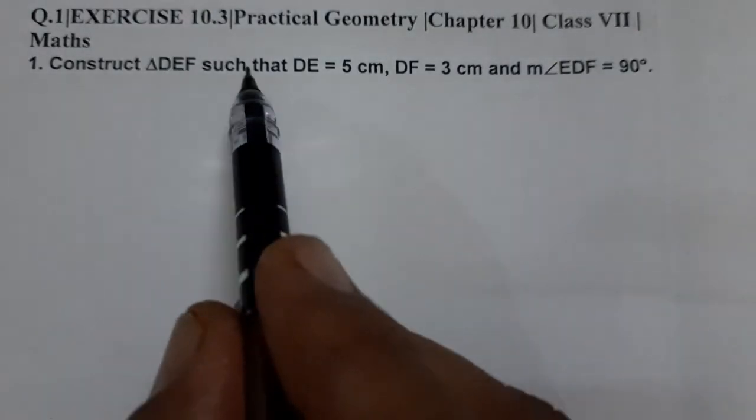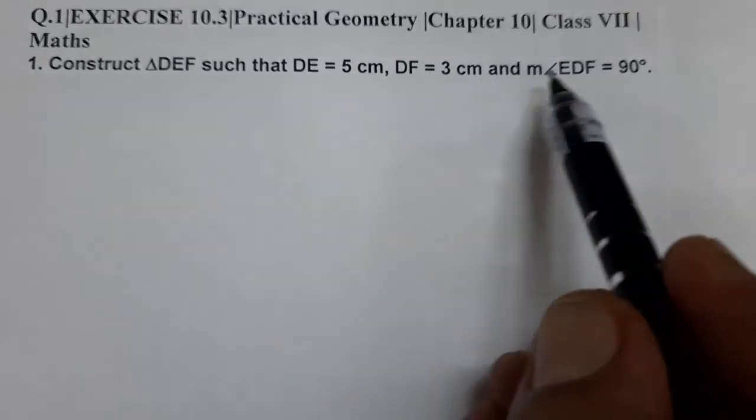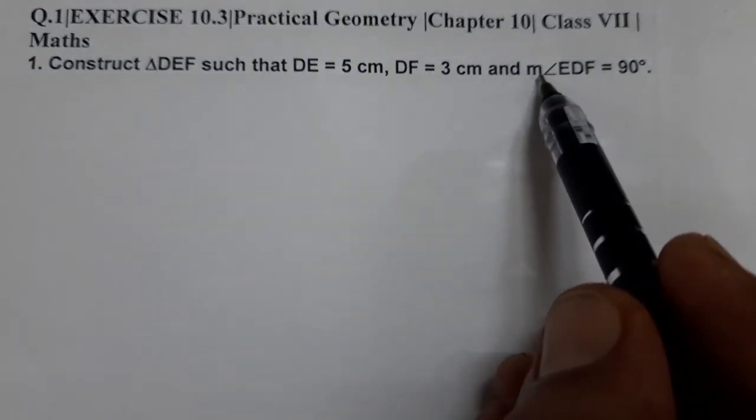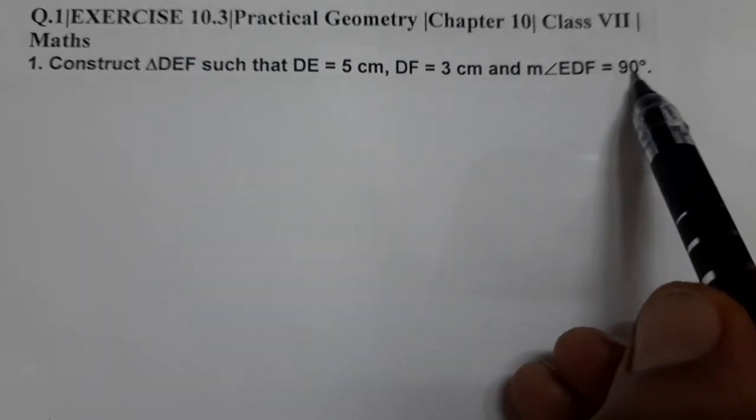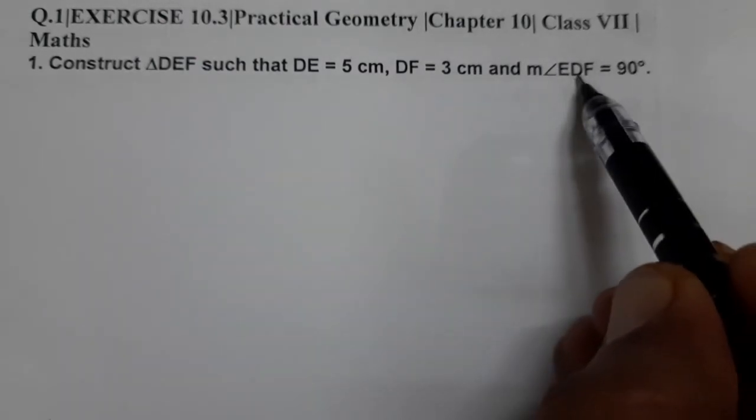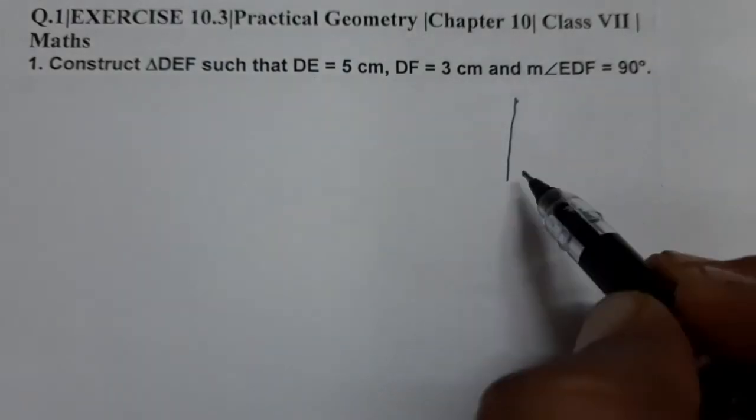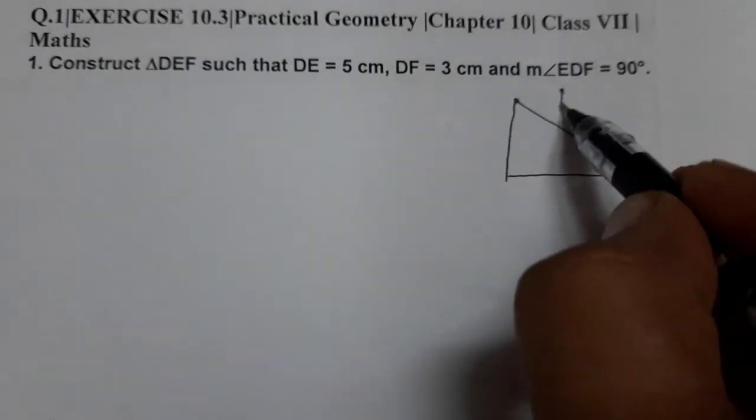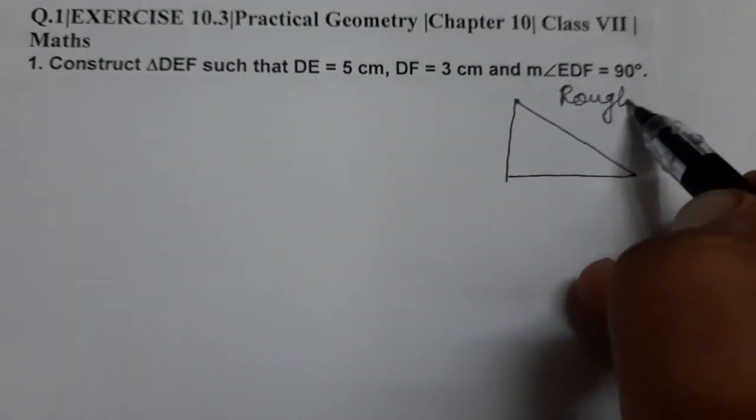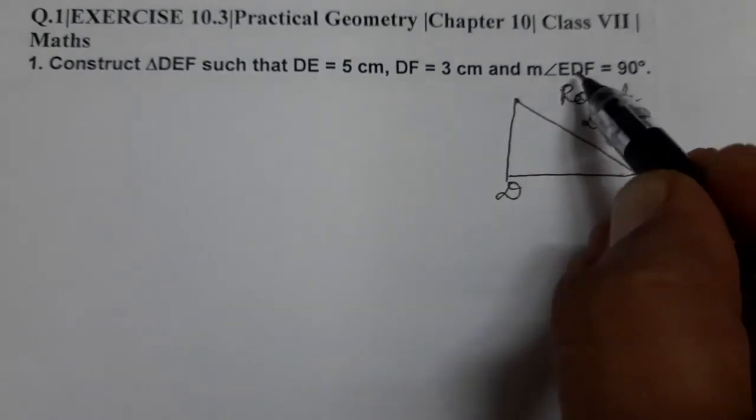In the rough diagram, DE is given to us as 5 cm, DF is 3 cm, and the measure of angle EDF is 90 degrees. So angle D is 90 degrees and we'll draw D at the base. This is the rough diagram we are making. Now we are giving this name as D because angle EDF is 90 degrees.